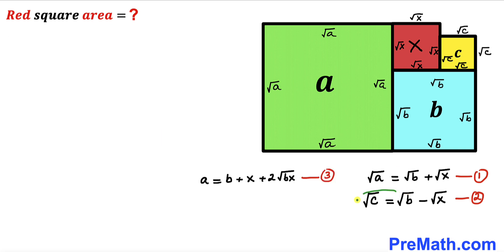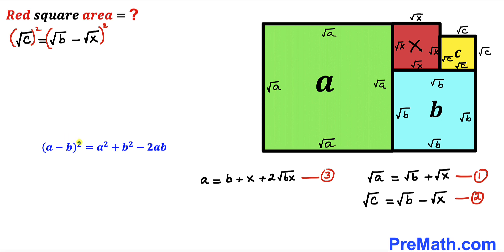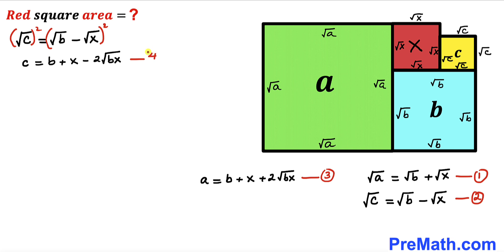Now let's focus on equation two: √c = √b − √x. We square both sides, applying the identity (p − q)² = p² + q² − 2pq to the right-hand side. This gives us: c = b + x − 2√(bx). We label this as equation number four.